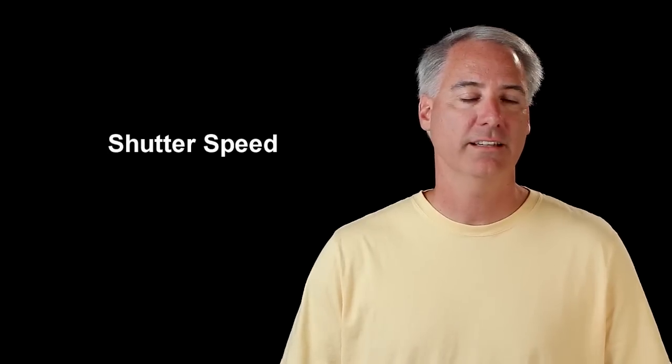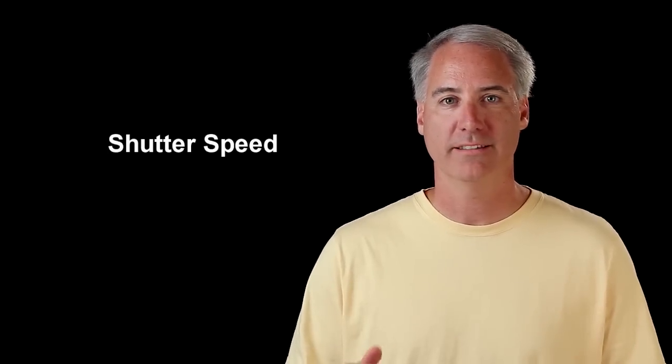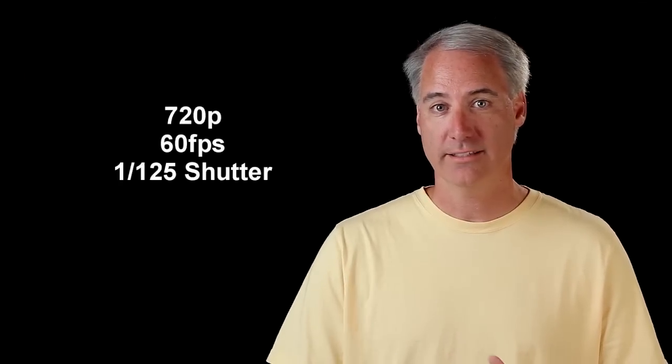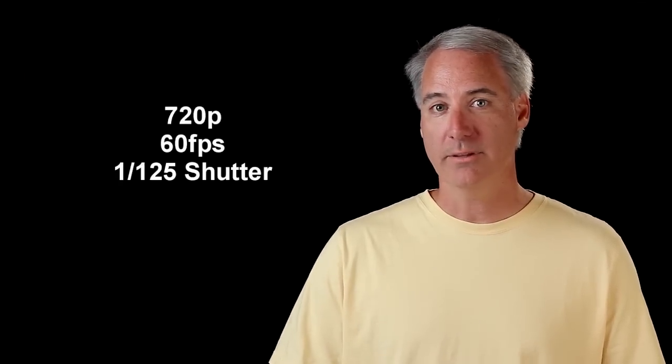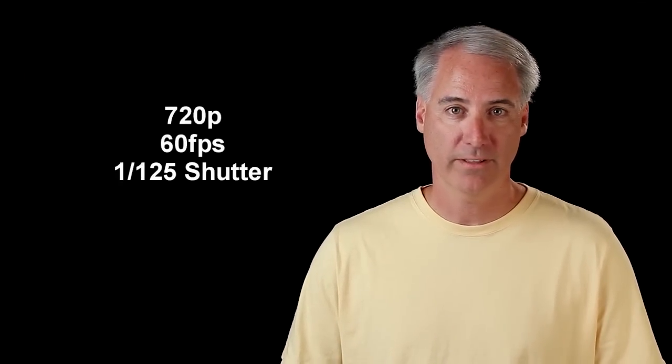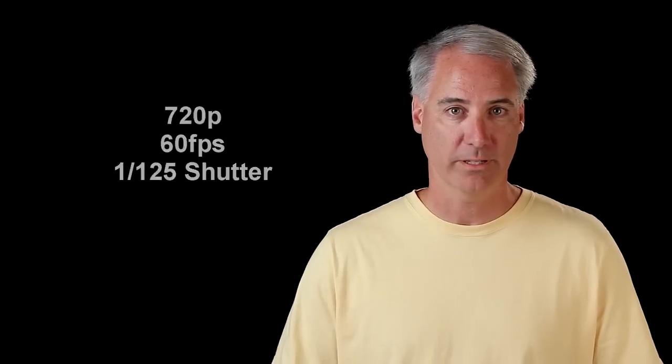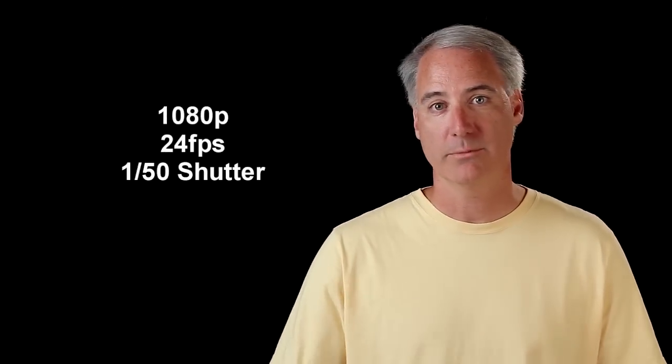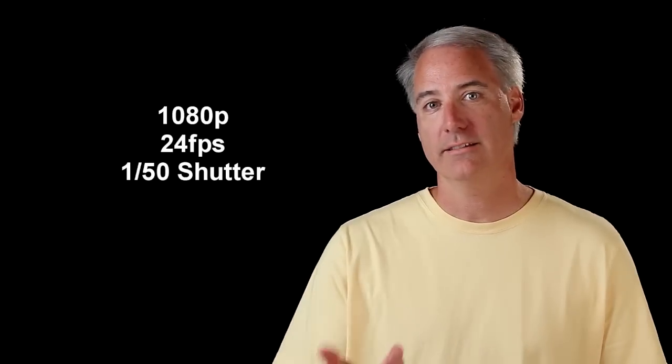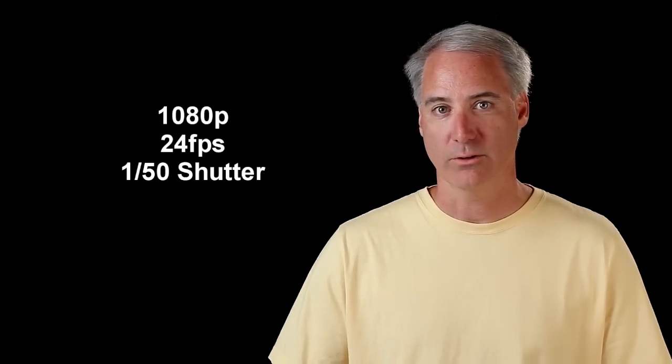The next thing is shutter speed and this thing I always, always have to check because it's really easy to bump the jog wheel and change the shutter speed when you're in the movie mode. So again, if I'm shooting at 720 and 60 frames a second, I'm going to double that and I'm going to shoot at 125th of a second shutter speed. If I'm like what I'm doing here, I'm filming at 24 frames a second, so I'm going to double that and it's going to be 50th of a second for a shutter speed.